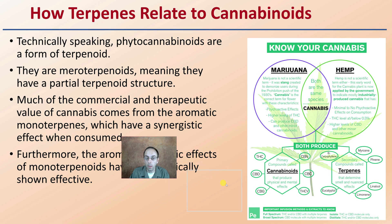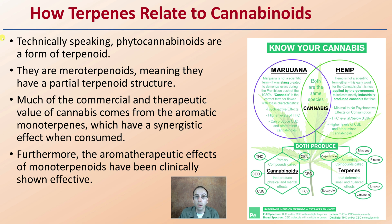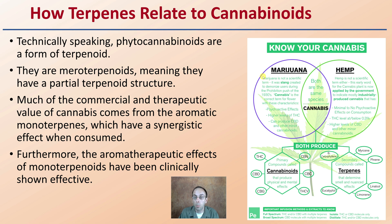How do terpenes relate to cannabinoids? Technically speaking, phytocannabinoids are a form of terpenoid — they are meroterpenoids, meaning they have a partial terpenoid structure. Much of the commercial and therapeutic value of cannabis comes from aromatic monoterpenes, which have a synergistic effect when consumed, and their therapeutic effects have been clinically shown to be effective. Both marijuana (above 0.3% THC) and hemp can produce cannabinoids and terpenes, just in different percentages and combinations.